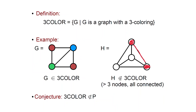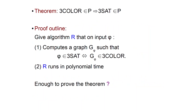People believe that 3-Coloring is difficult but nobody can show it. So instead we show a beautiful proof that if 3Color is solvable efficiently then also 3SAT is solvable efficiently. We are going to give an algorithm R that on input a formula φ computes a graph G_φ such that the formula is satisfiable if and only if the graph G_φ is 3-Colorable. R should run in polynomial time.